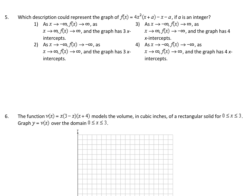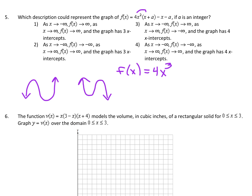Number 5: which description could represent the graph of this function if a is an integer? A is just some number. There are a couple of ways to go about this. If you think about the first term — if we had multiplied this out, it would give us 4x cubed — so we have a third-degree function. A third-degree function is going to have three directions: it's either going to go up-down-up, or down-up-down. But if our leading coefficient is positive, it has to end going up. So the down-up-down option is not a possibility.